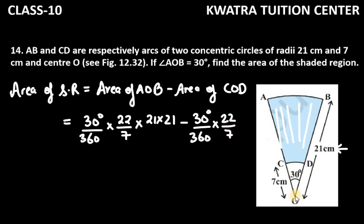Then R². The smaller sector's radius is 7, so 7². So 7 and 7 cancel. And 30 and 360 can also cancel. You can get 12 here, again 12 here. Now what can you take common? You can take common as 1/12 and you can take 22.